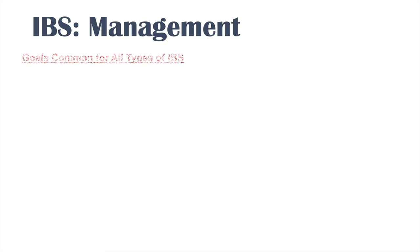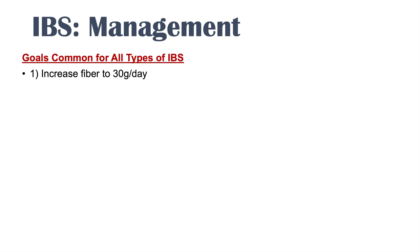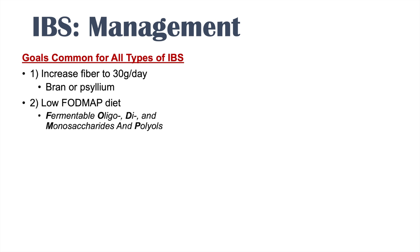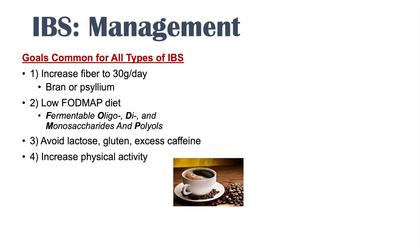There are common management goals for all types of IBS. First, increase fiber intake to about 30 grams per day using bran, psyllium, or diet. Second, follow a low FODMAP diet — FODMAP stands for fermentable oligosaccharides, disaccharides, monosaccharides, and polyols — which can lead to bloating and abdominal distension. Third, avoid lactose, gluten, and excess caffeine. Fourth, increase physical activity. Fifth, stress reduction, as stress and psychiatric symptoms can worsen or cause IBS.